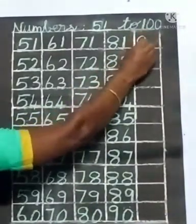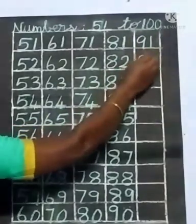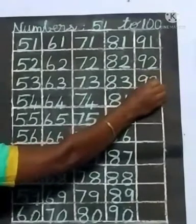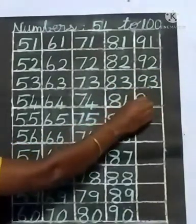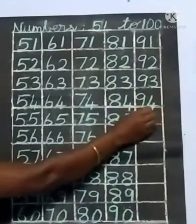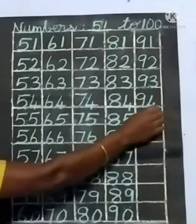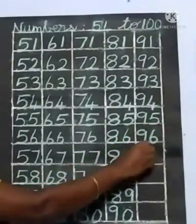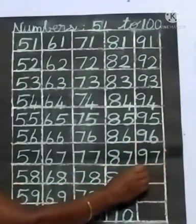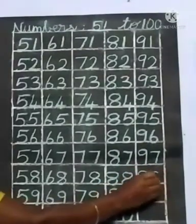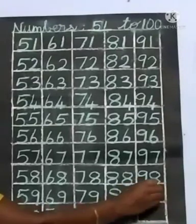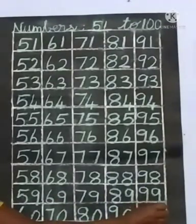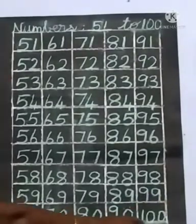Next slide. 91, 91 after 9, 2, 92. 92 after 9, 3, 93. 93 after 9, 4, 94. 94 after 9, 5, 95. 95 after 9, 6, 96. 96 after 9, 7, 97. 97 after 9, 8, 98. 98 after 9, 9, 99. 99 after 1, 0, 0, 100.